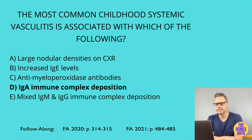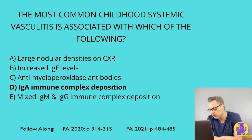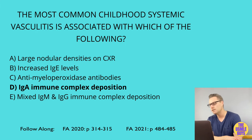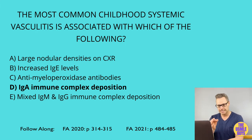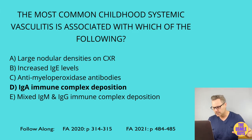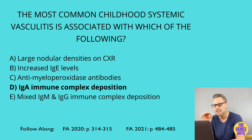The correct answer here is D. We're talking about immunoglobulin A vasculitis, also commonly referred to as Henoch-Schönlein purpura, which is the most common childhood systemic vasculitis. The vasculitis occurs secondary to IgA immune complex deposition and is also associated with IgA nephropathy. The classic presentation is a triad of palpable purpura on the buttocks and legs, arthralgias, and abdominal pain. The abdominal pain is commonly associated with intussusception.